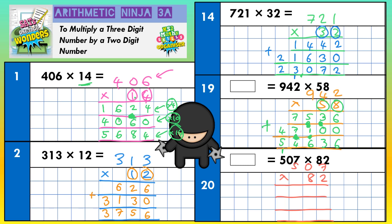Final question: 507 times 82. The top line we're going to use for the 2, the second line for the 8 which means 80, and the third line to add everything together. 2 times 7, 2 times nothing, 2 times 5 in that order. 2 sevens are 14 — put the 4 in, carry the 1. 2 nothings are nothing, plus the 1, is 1. And 2 fives are 10.